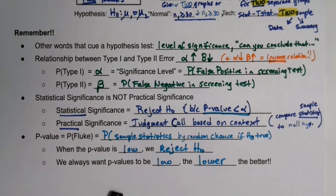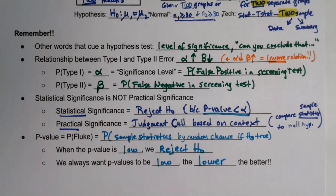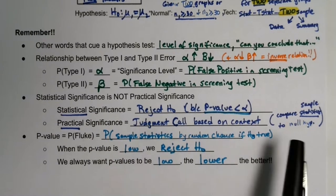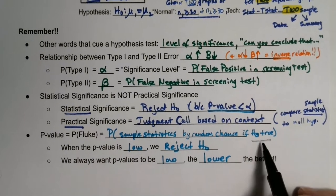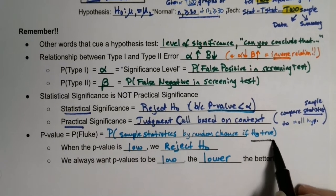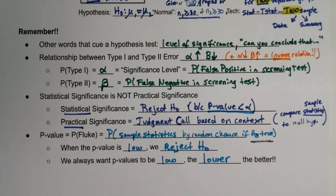Those three options should sound familiar from chapter eight: sampling bias, a fluke, or the null hypothesis was wrong — the parameters we assumed were incorrect. Those are basically our only options. I hope that helps when you put it all together for chapter 11.